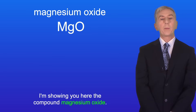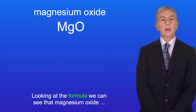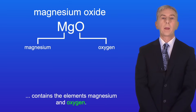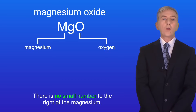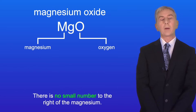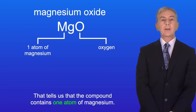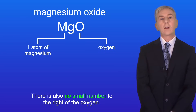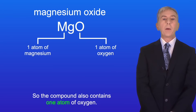Here is the compound magnesium oxide. Looking at the formula we can see that magnesium oxide contains the elements magnesium and oxygen. There's no small number to the right of the magnesium, so that tells us that the compound contains one atom of magnesium. And there's also no small number to the right of the oxygen, so the compound also contains one atom of oxygen.